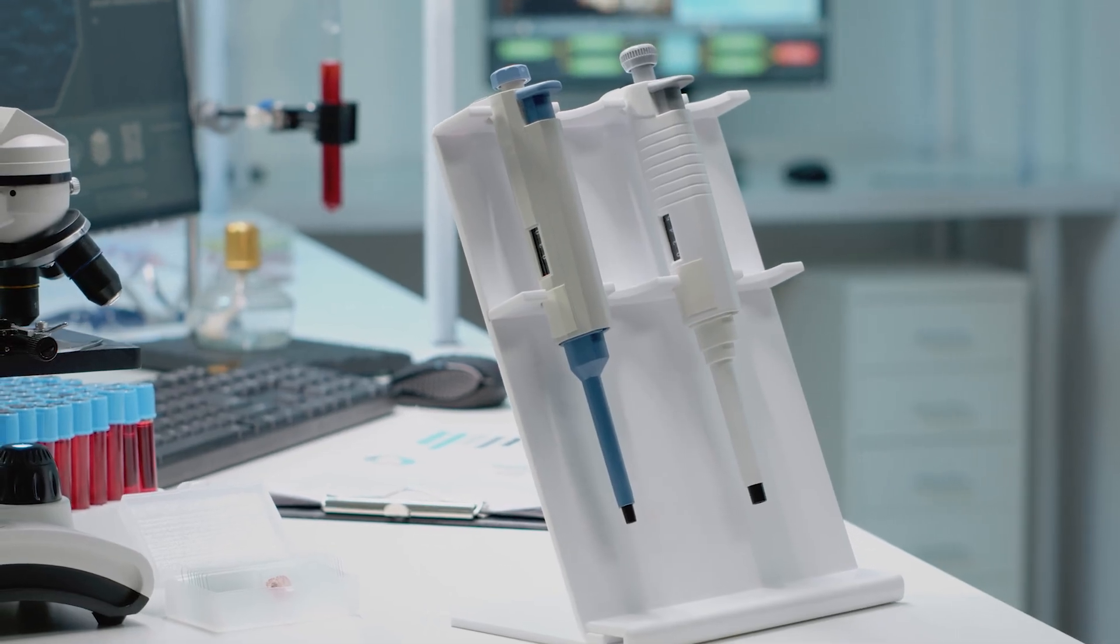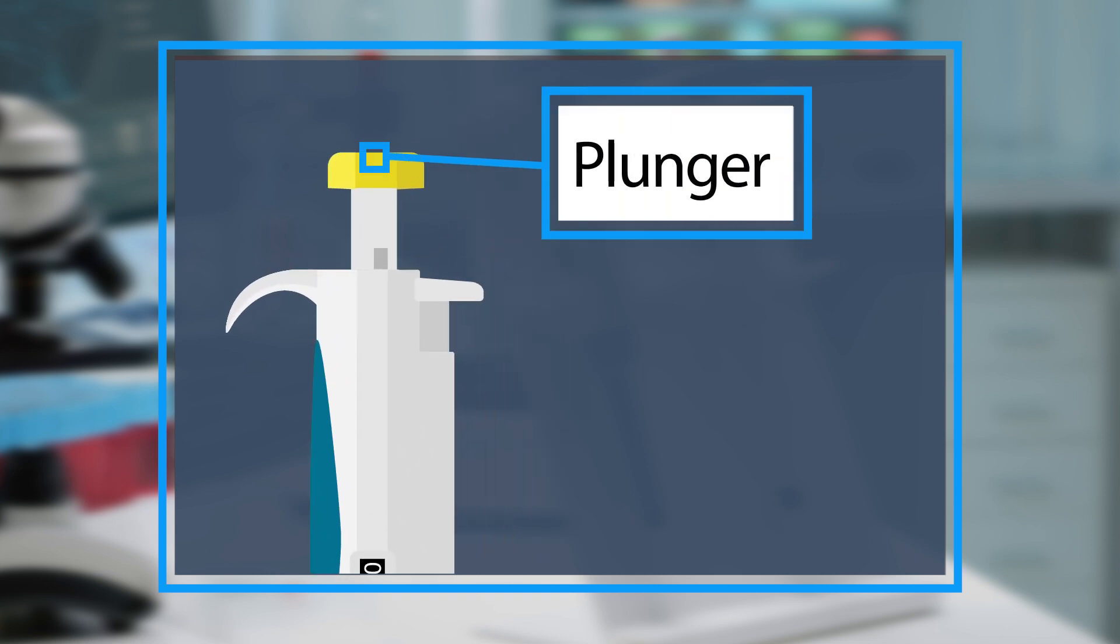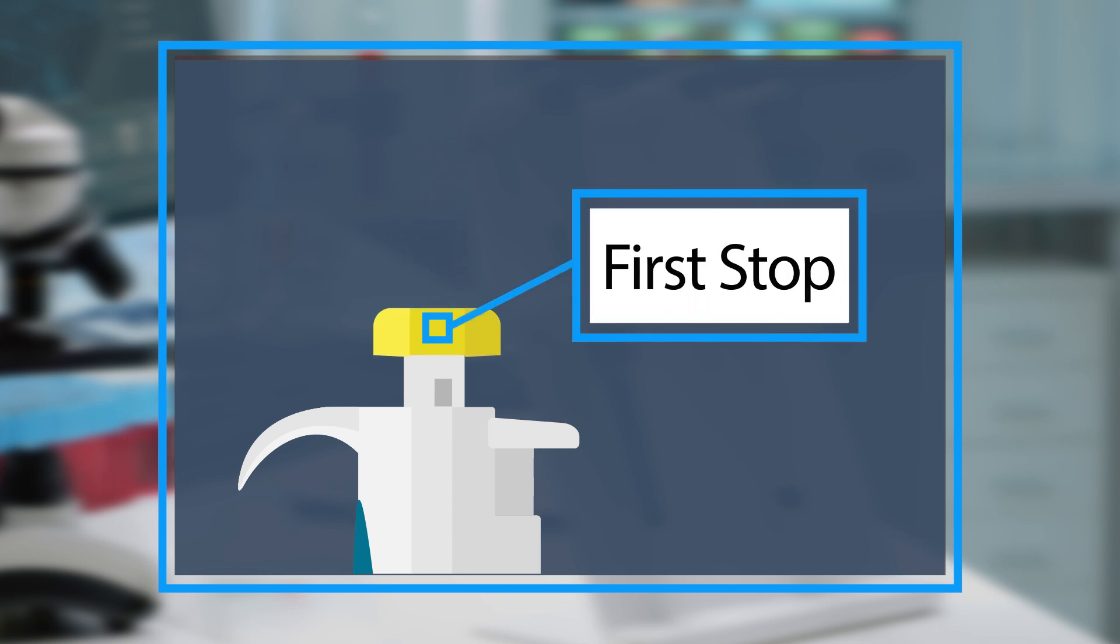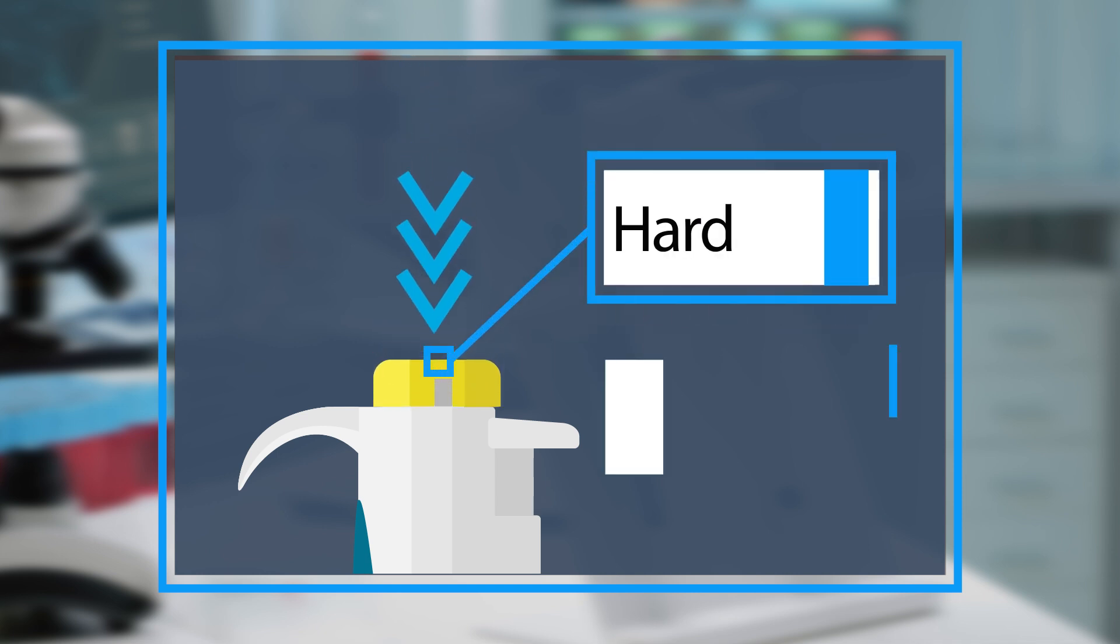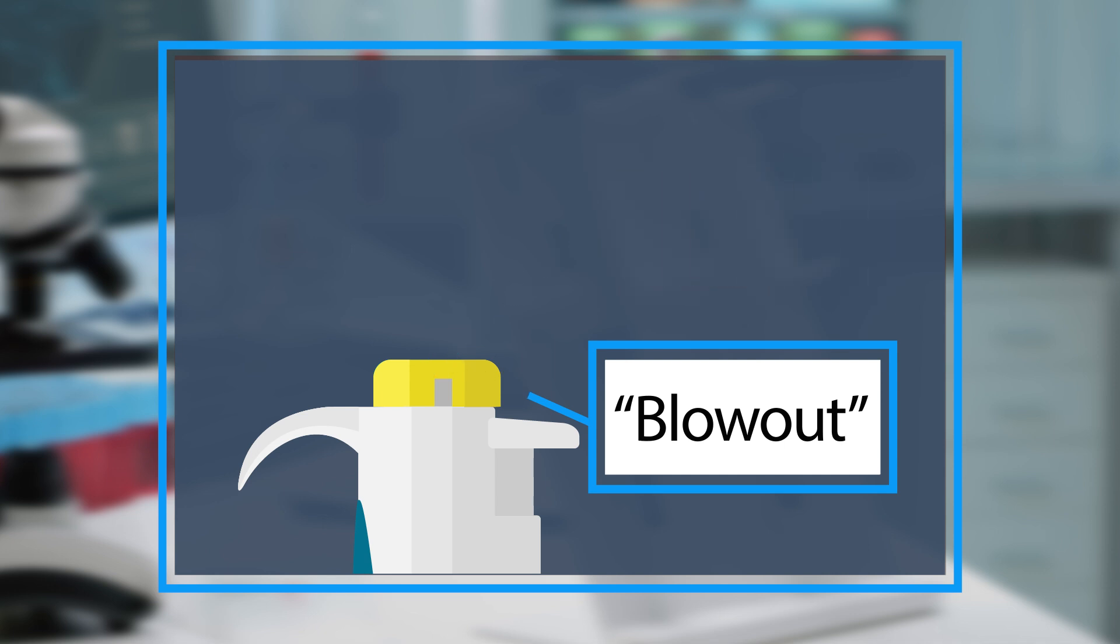Now let us learn the parts of the manual micropipet. The plunger: be sure to feel the difference in the pressure required to meet the first and second stop of the plunger. The first stop is best described as a slight resistance in the depression of the plunger. The hard stop, or blowout, dispenses the last drop, which is essential when working with small volumes.